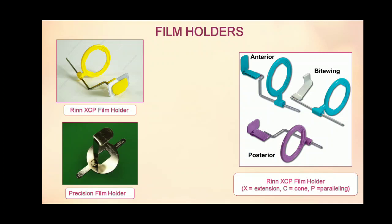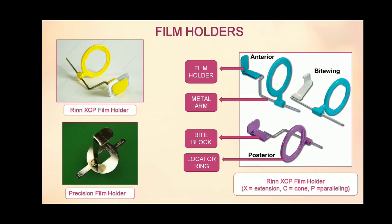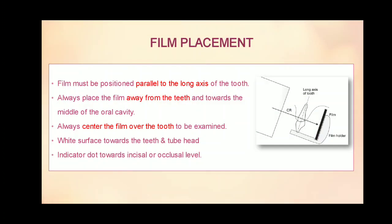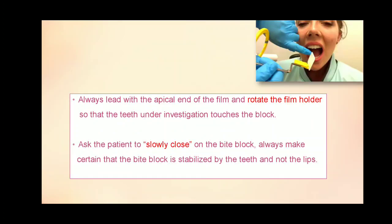The RIN XCP film holder contains a film support to support the film, a bite block on which the patient bites, a metal arm, and a locator ring. For film placement, the film must be positioned parallel to the long axis of the tooth. Always place the film away from the teeth and towards the middle of the oral cavity, and always center the film over the tooth to be examined. The white surface is always towards the teeth and tube head, and the indicator dot is always at the incisal or occlusal level. Always lead with the apical end of the film and rotate the film holder so that the teeth under investigation touch the bite block. Ask the patient to slowly close on the bite block, and always make sure that the bite block is stabilized by the teeth, not by the lips.